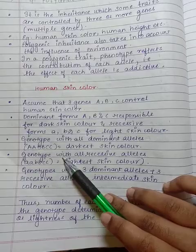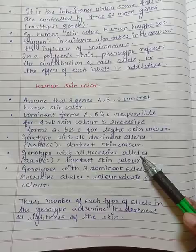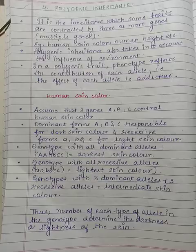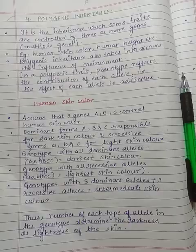Genotype with all recessive alleles, small aabbcc, the lightest skin color. Genotypes with three dominant alleles plus three recessive alleles give intermediate skin color. Thus, the number of each allele in the genotype determines the darkness or lightness of the skin.